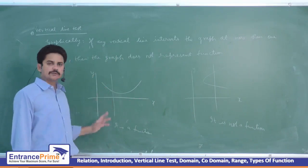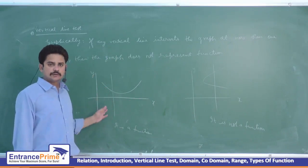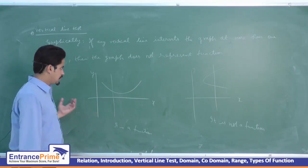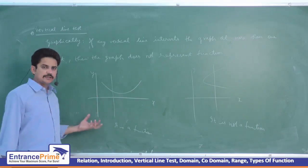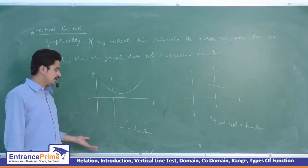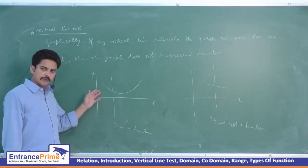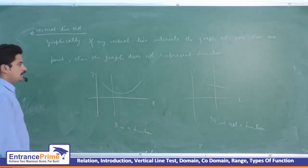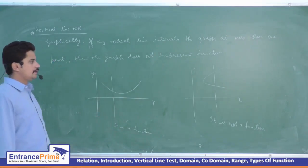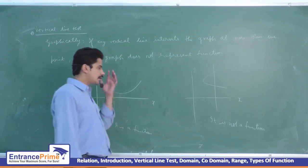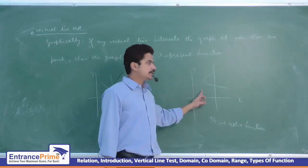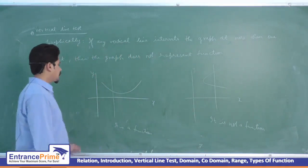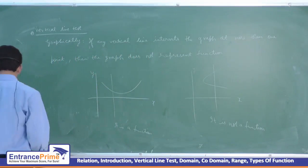Here, for one x there is one y — meaning each element in set A has a unique image in set B, so it is a function. Therefore, if we draw a vertical line and it intersects the graph at more than one point, it is not a function; otherwise it is a function.